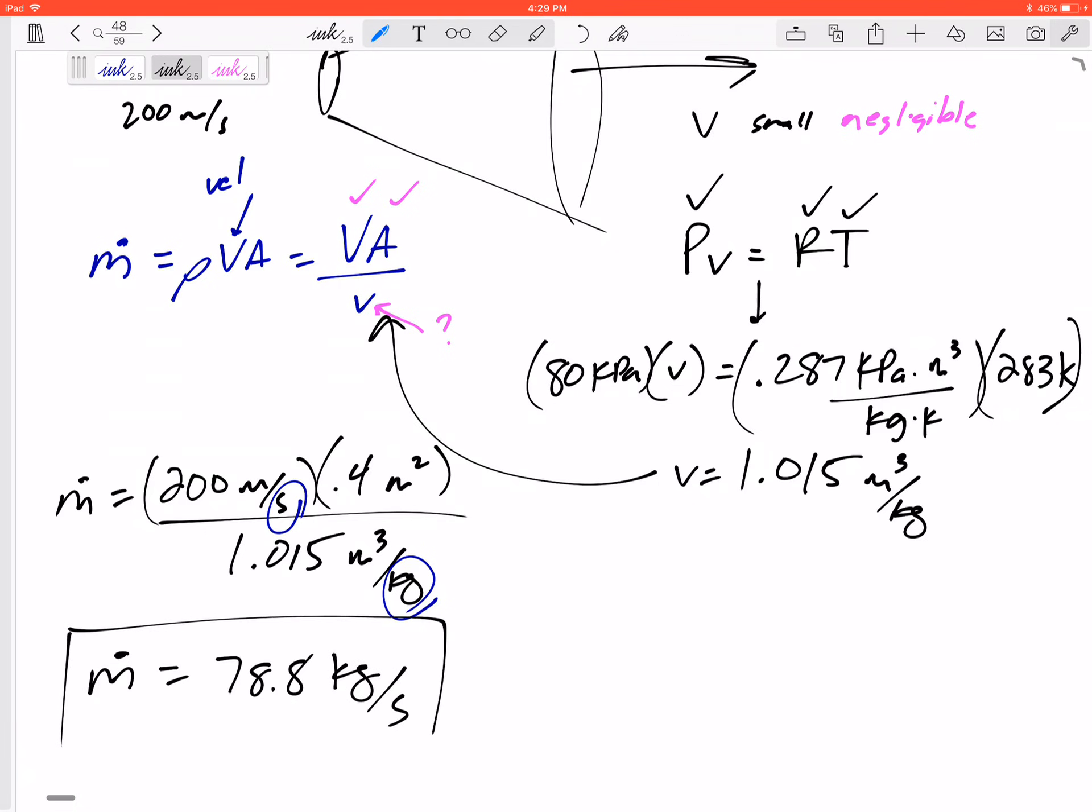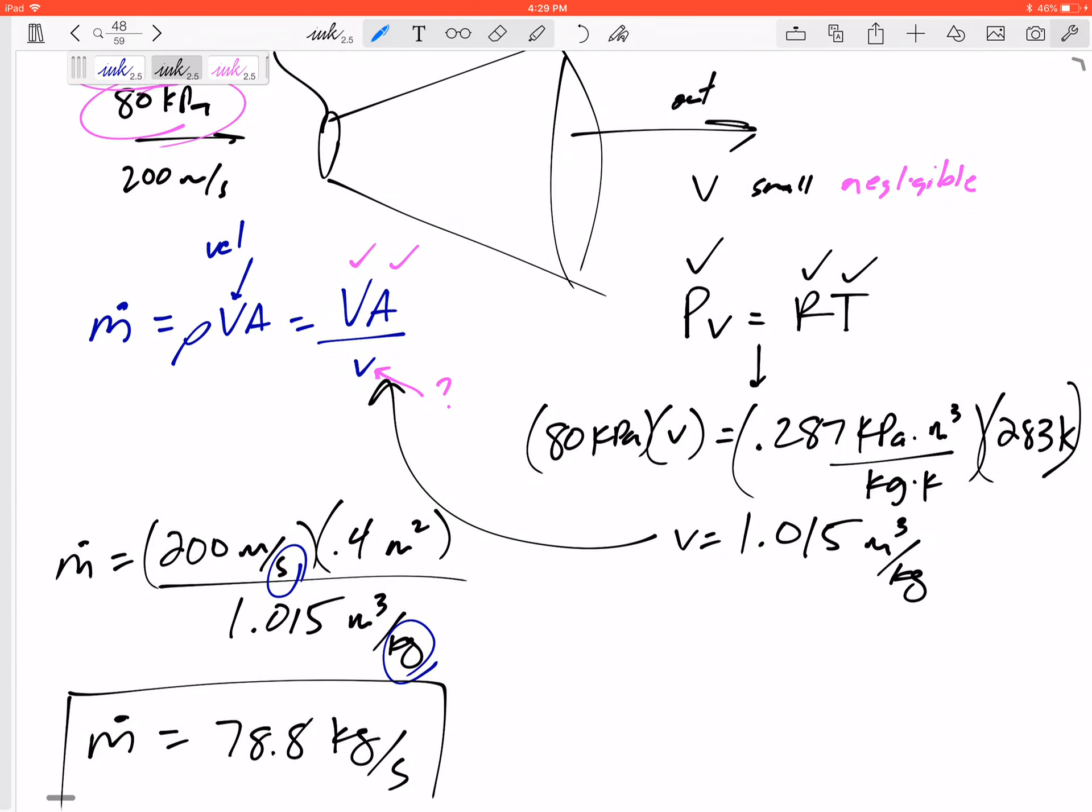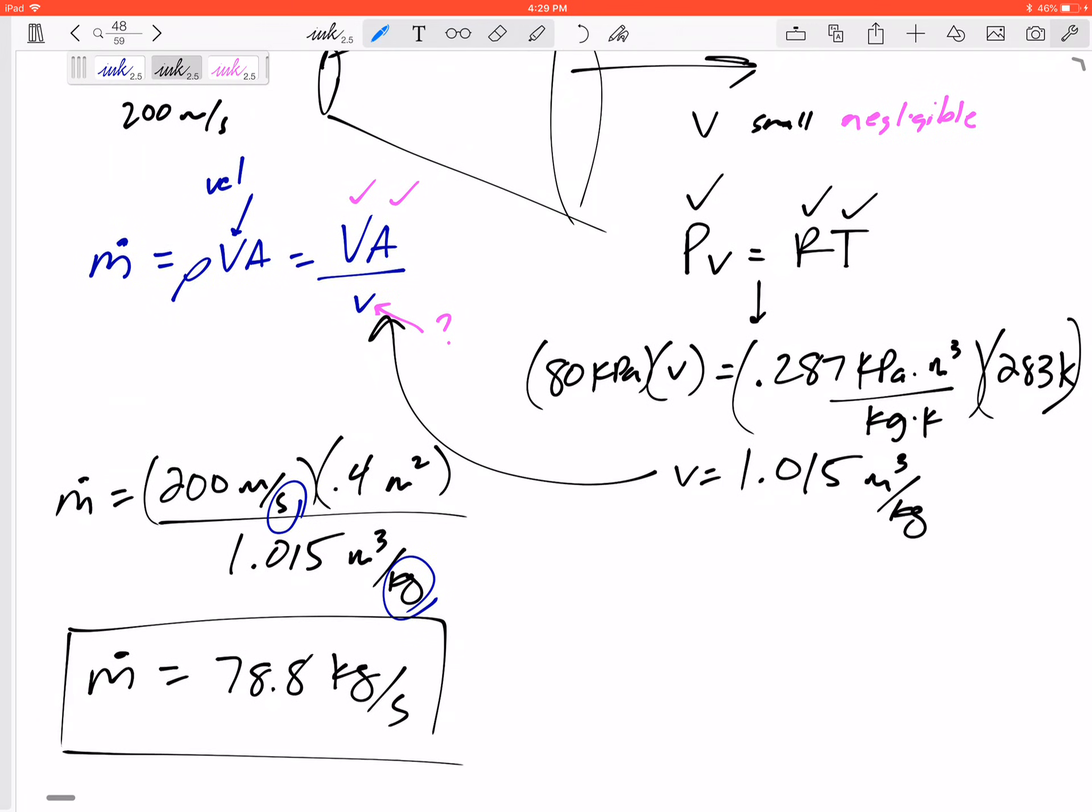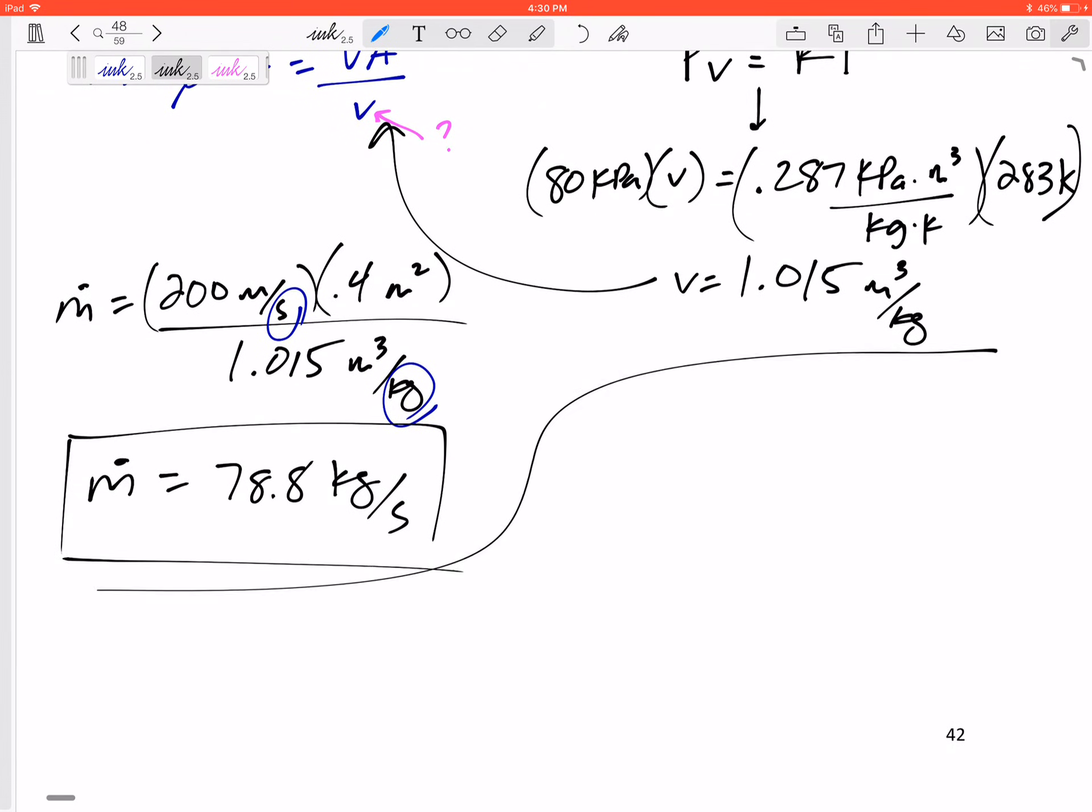So a lot of different equations, different places to find these numbers in order to get that m dot. Second, we need to find the temperature of the air leaving the diffuser. So we need to find some of this outlet information. Now is where we can go to our energy equation.